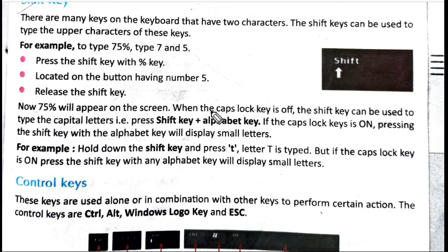When the Caps Lock key is off, the Shift key can be used to type capital letters - that is, Shift plus alphabet. When the Caps Lock key is off and you want to type a capital letter, press the Shift key with any alphabet key you want to use, and the capital letter will appear.